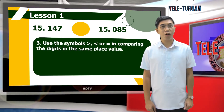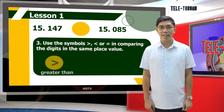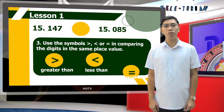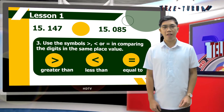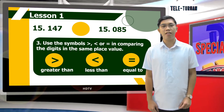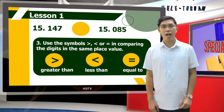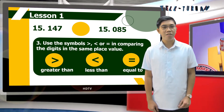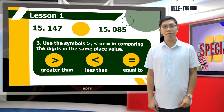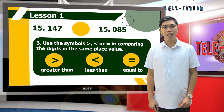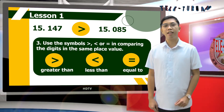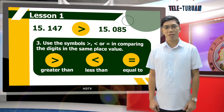Use the symbols greater than, less than, or equal to in comparing the digits in the same place value. Again, fifteen and one hundred forty-seven thousandths is greater than fifteen and eighty-five thousandths.